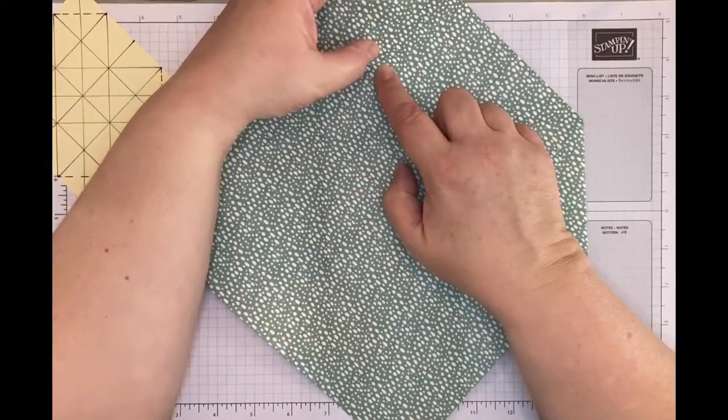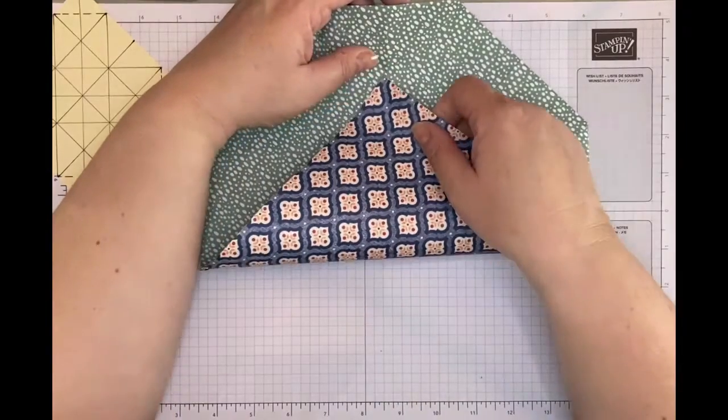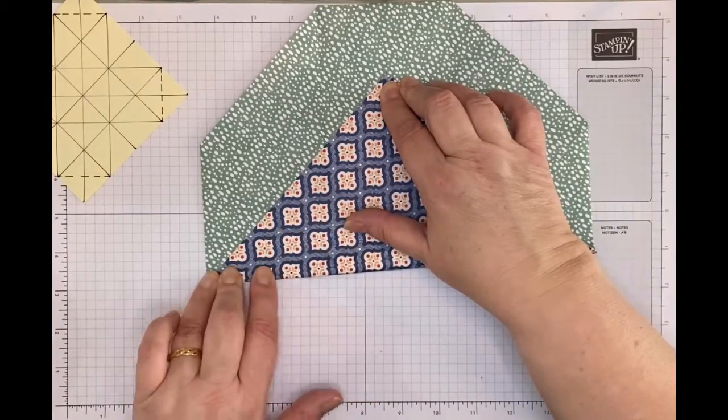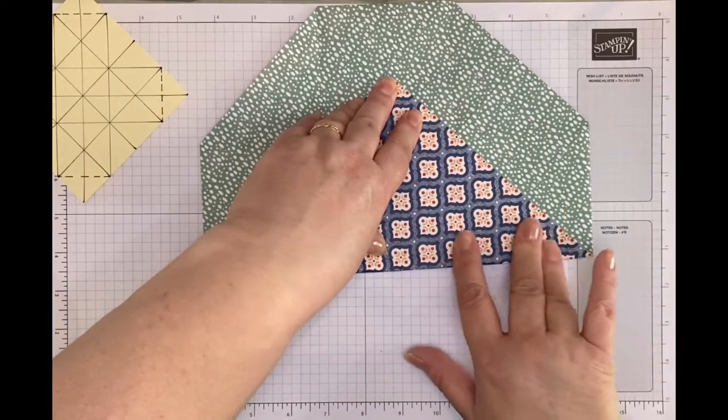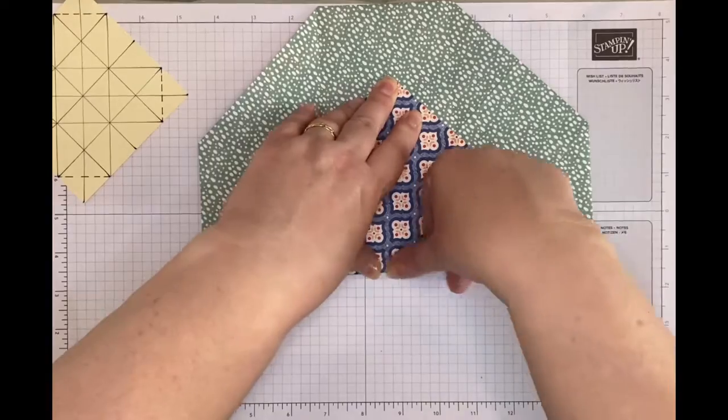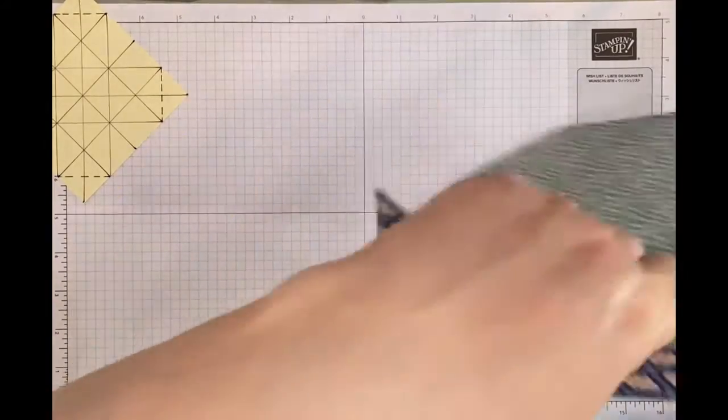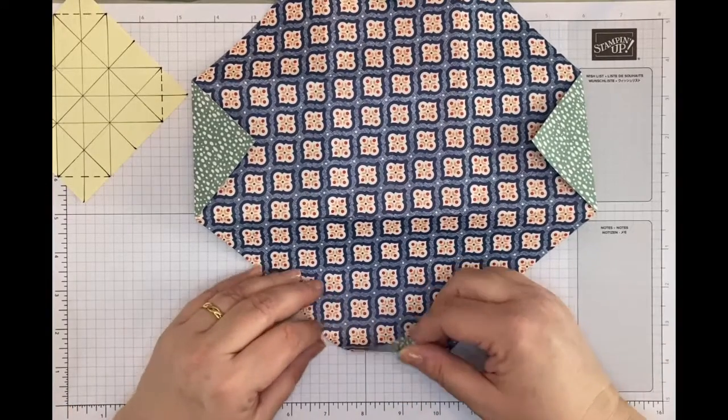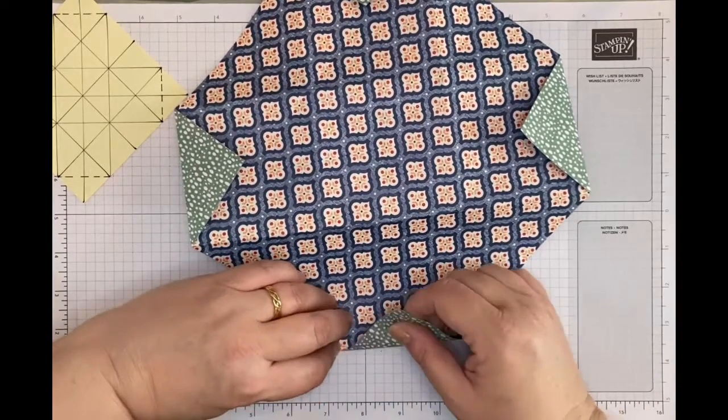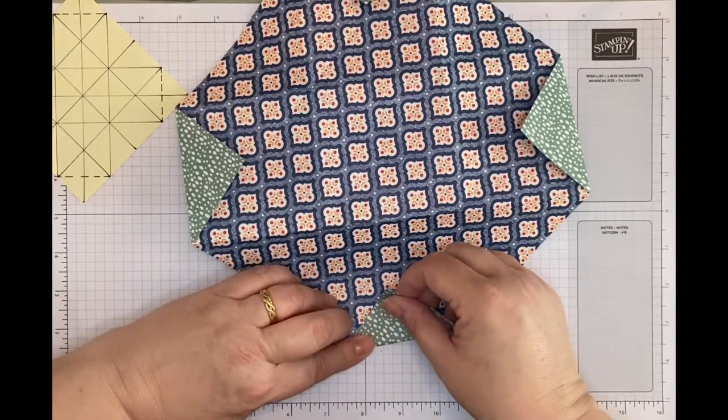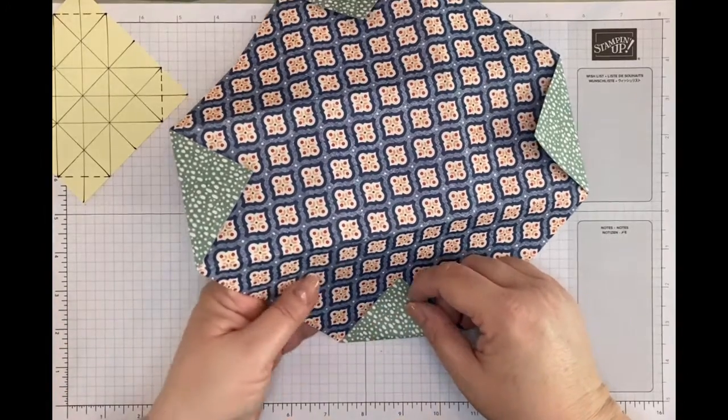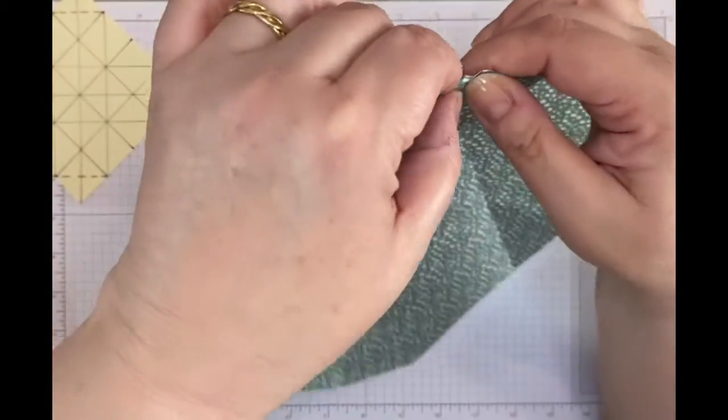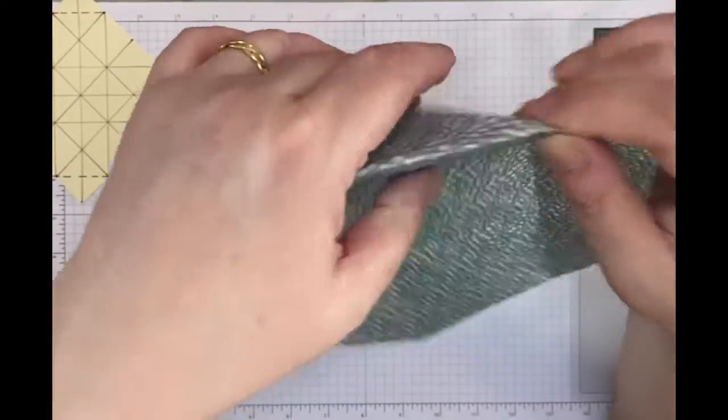I'm going to find that corner that it needs to fit into, which is just there. Bring this down and then bring this one down, fold it across like that. Turn it over and bring this piece just in. Careful you don't rip it like I just did.